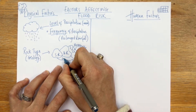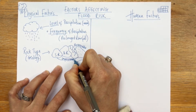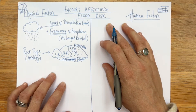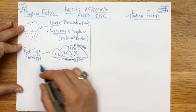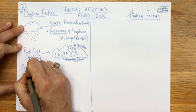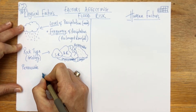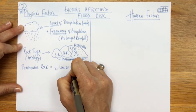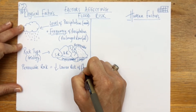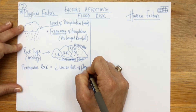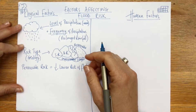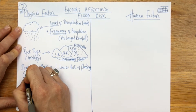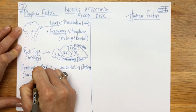Some rocks are impermeable. Impermeable rocks might be things like clays, which don't allow water in and are not useful when it comes to absorbing floodwater. The key word to remember: permeable rock equals a lower risk of flooding, because the rock itself can actually help absorb the water. Examples of permeable rocks include sandstone, which is very permeable.